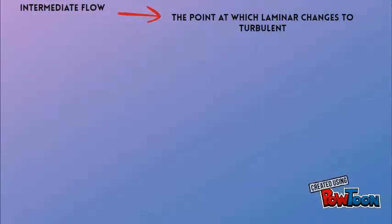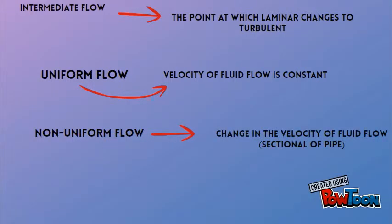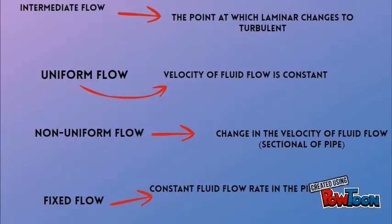Intermediate flow is the point at which laminar changes to turbulent. Uniform flow is velocity of fluid flow is constant. Non-uniform flow is change in the velocity of fluid flow, sectional of pipe. Steady flow is constant flow rate in the pipe.